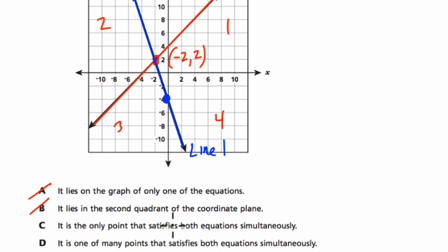It is the only point that satisfies both equations simultaneously. That's a fancy way of saying there are equations that represent each line that you're given. And this point, if you plug into either equation, it's on both lines. This is the point that works for both equations.